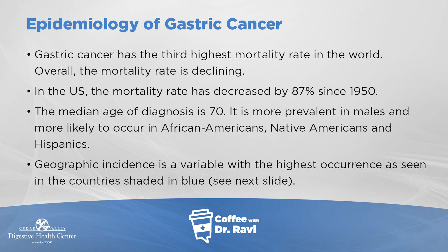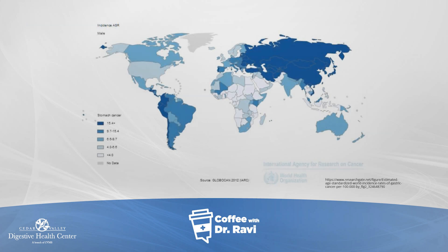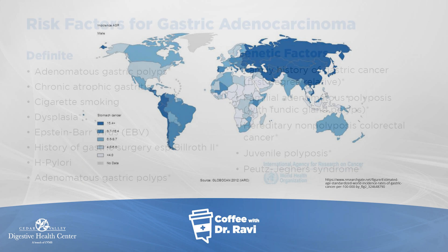If you look at the worldwide incidence, you will see that the deeply shaded areas are where the incidence is higher. The US is not so high, but it just gives you a sense of how the distribution is across the world.